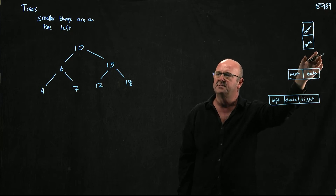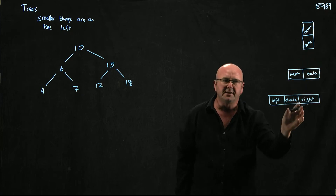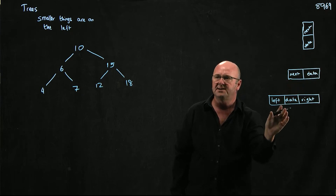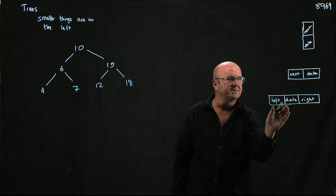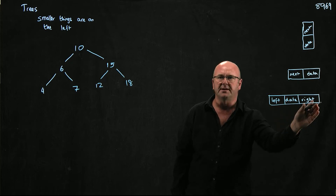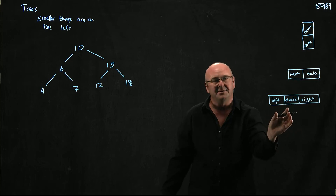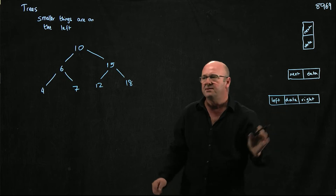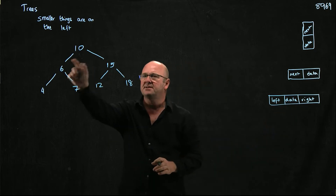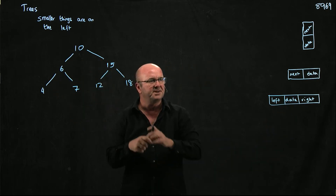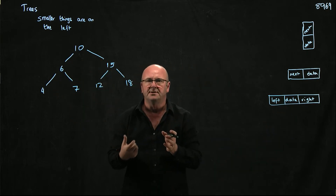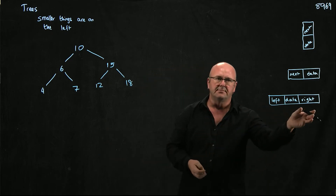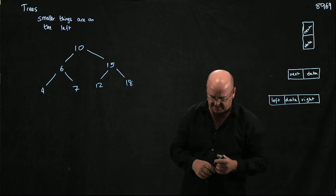When writing the code for a tree, we use the same concepts as in linked lists. We're going to have a node, but instead of having one pointer called next, it has two pointers which we call left and right. We call them left and right because we're relating them to a tree that we draw, so it makes more sense.